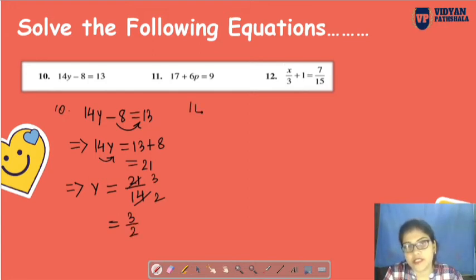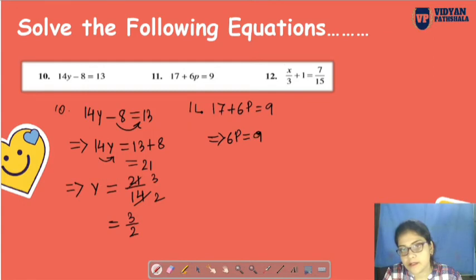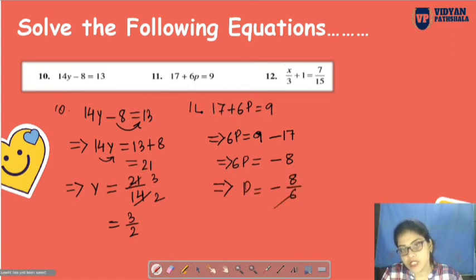Next is 17 plus 6P equals 9. So 6P equals 9 minus 17. That means 6P equals minus 8. 17 minus 9 - if you subtract it, it will be 8, and it will be negative. So 6P means 6 into P, so P equals minus 8 by 6. 2 fours are 8, 2 threes are 6, so minus 4/3.